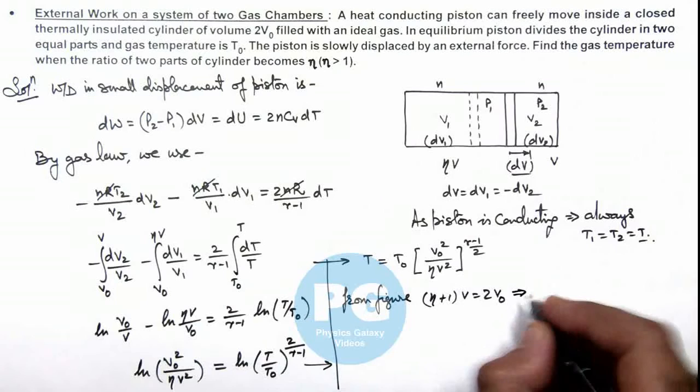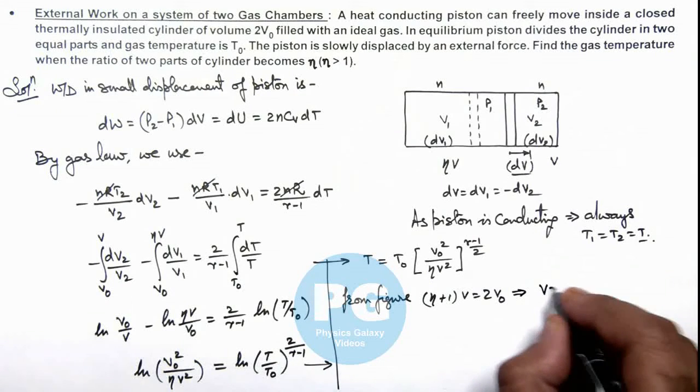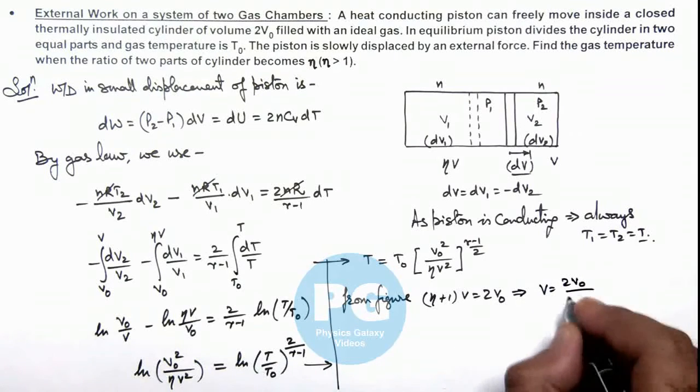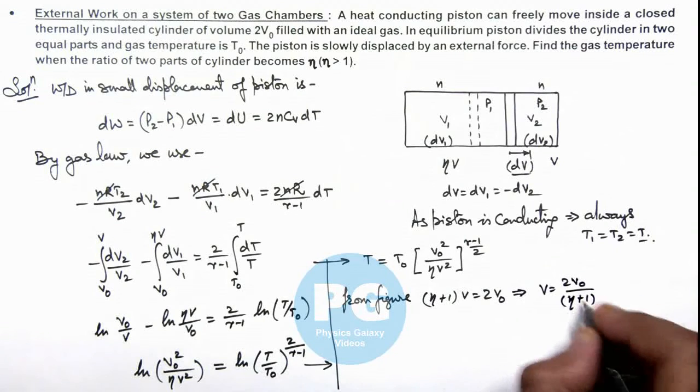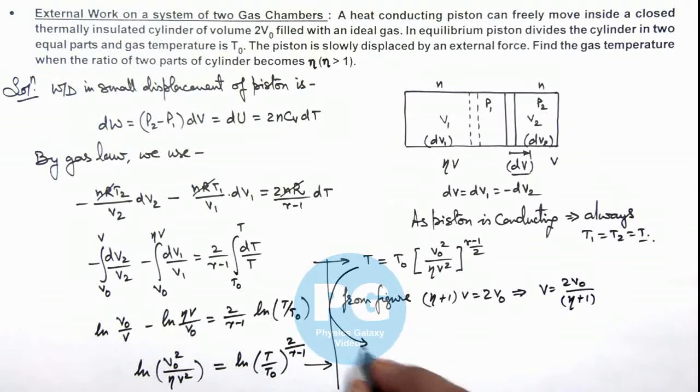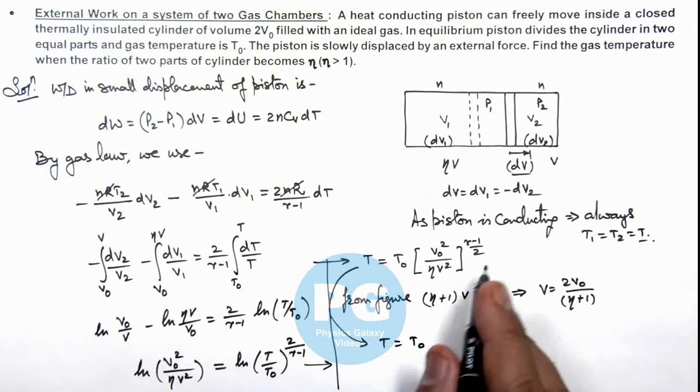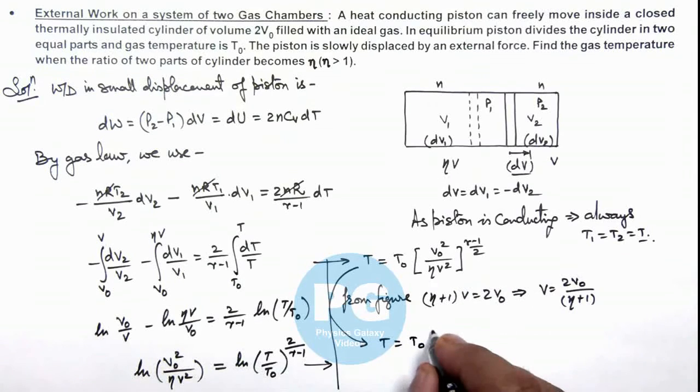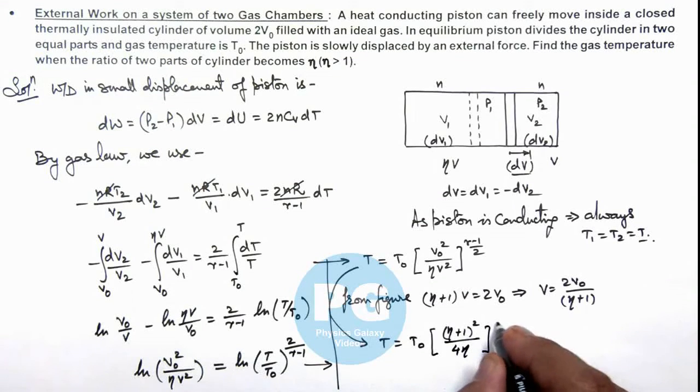So it gives us the value of V as 2V₀/(η+1). If we substitute it over here, this gives T is equal to T₀. On substituting the value we are getting (η+1)²/(4η) to whole power (γ-1)/2. That is the final result of this problem.